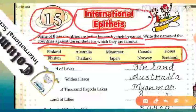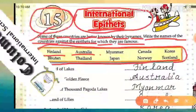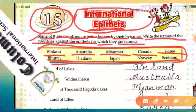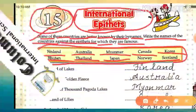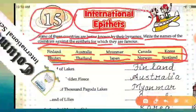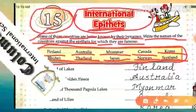The countries listed are: Finland, Australia, Myanmar, Canada, Korea, Bhutan, Thailand, Japan, Norway, and last one is Scotland. These are all the country names given in the box.